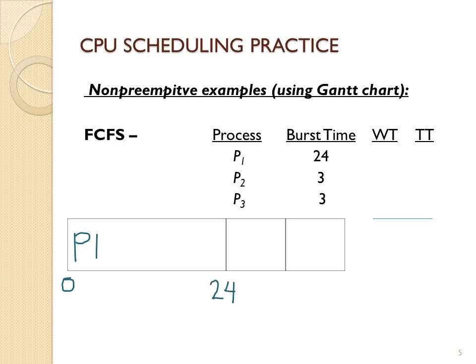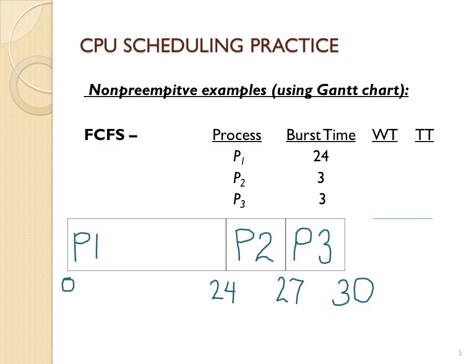The Gantt chart represents which process is currently on the CPU. P1 is on the CPU with a burst time of 24 time units. Then at time 24, P2 goes for three time units until time 27, followed by P3 for three time units finishing at time 30. We have 100% CPU utilization, and all processes only waited one time, so their wait time and response time will be the same.